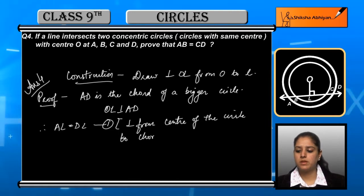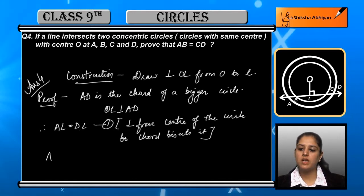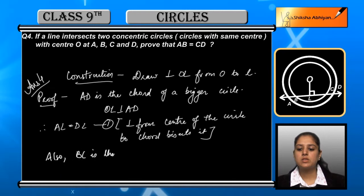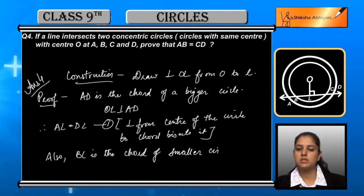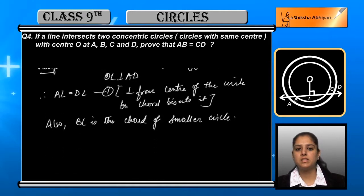BC which is the chord of the smaller circle, just as AD is the chord of the bigger circle, BC is the chord of the smaller circle. So same way, AL and DL are equal because they were the distances.